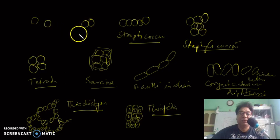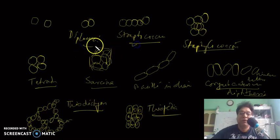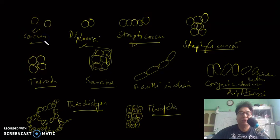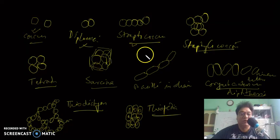Diplococci, Streptococci, and Staphylococci all remain in the hemispherical stage as well — you can simply call them cocci. These are the different types of cellular arrangements found in the bacterial system.